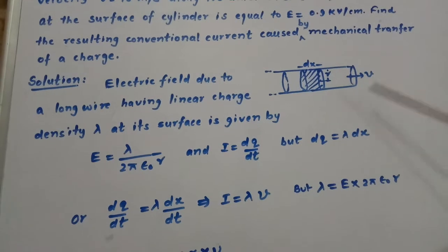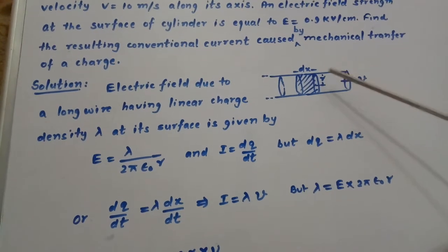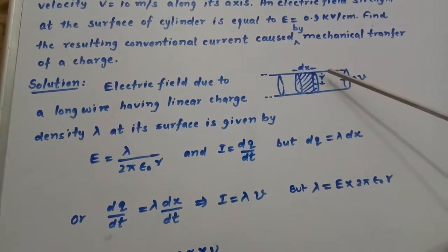Here cylinder is shown, this is velocity, this is small portion dx and the radius is small r.